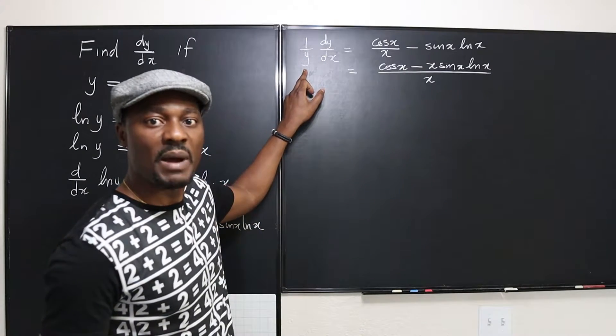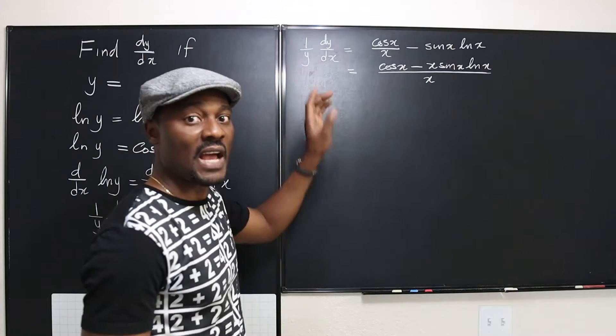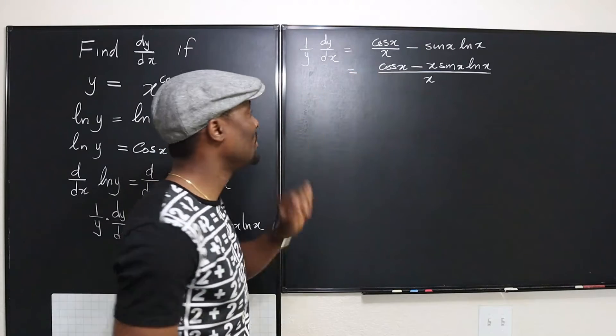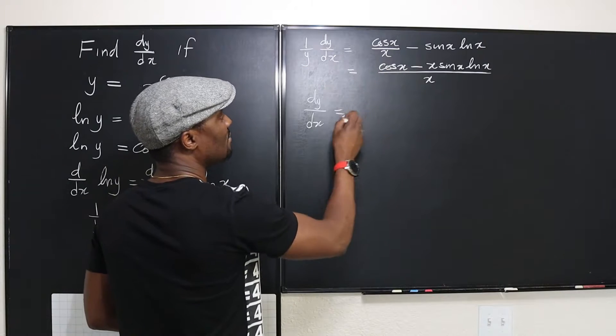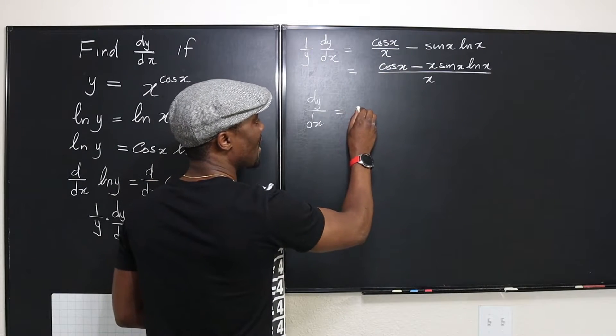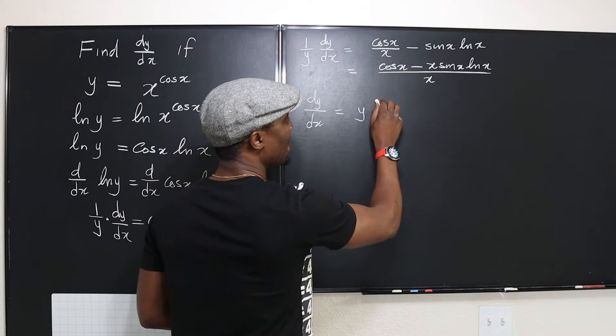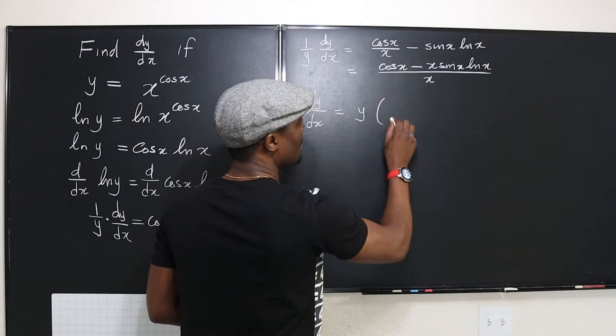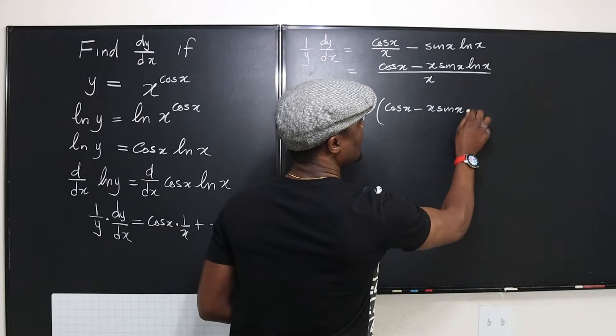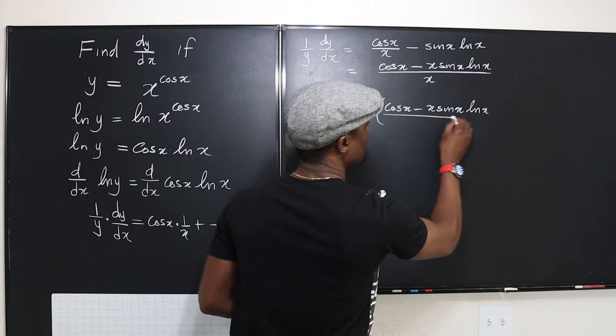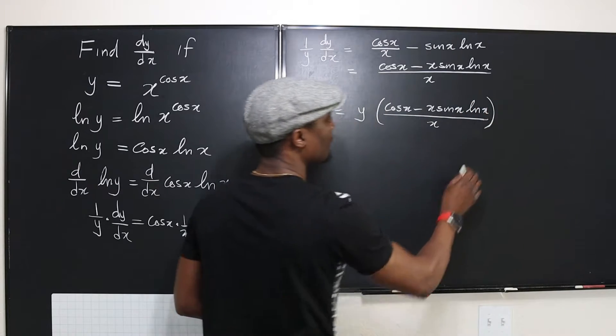Now I can multiply both sides by y, so I can get rid of the y on this side. Remember, we're looking for dy/dx. So I'm going to end up with dy/dx is equal to, if I multiply both sides by y, this cancels out, and I have y multiplying this expression here, cosine x minus x sine x ln of x, all divided by x.